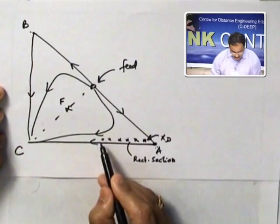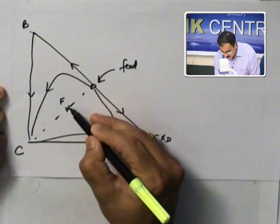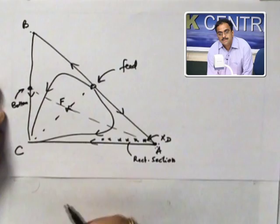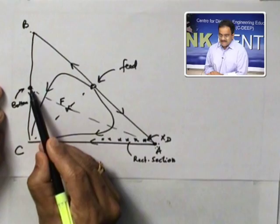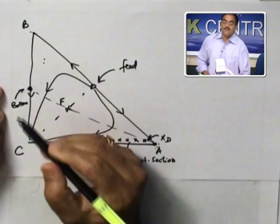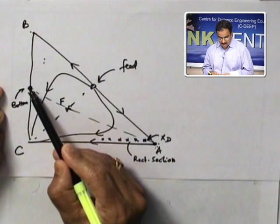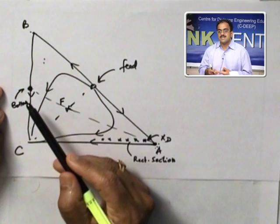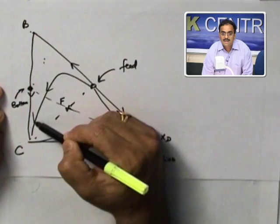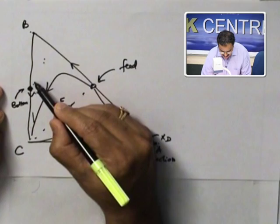It looks a bit different from what we have learned before — it goes this way because the RCM is different here. I have to follow the RCM for a rectifying section profile. Now, this is my overall feed, this is my top composition. The bottom composition would be here — straight line, lever rule. Now, if I go from bottom to top, which direction will I go — towards B or C? Bottom to top is the stripping section, and it goes opposite to the RCM direction.